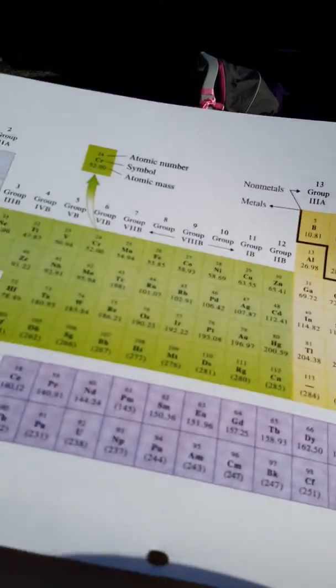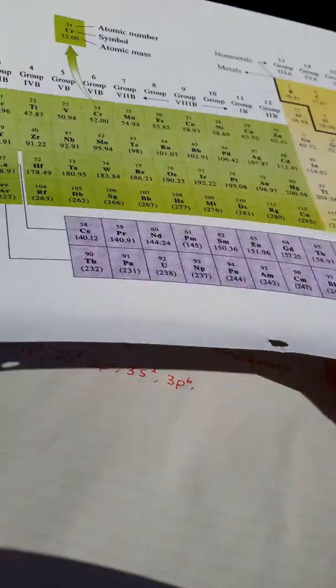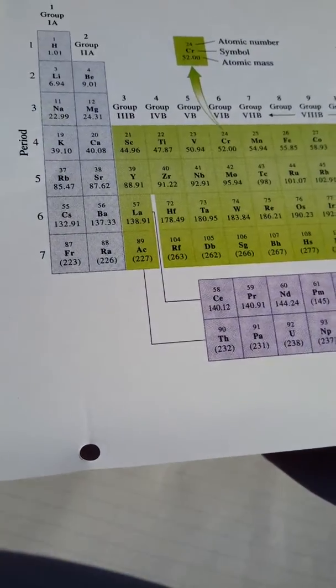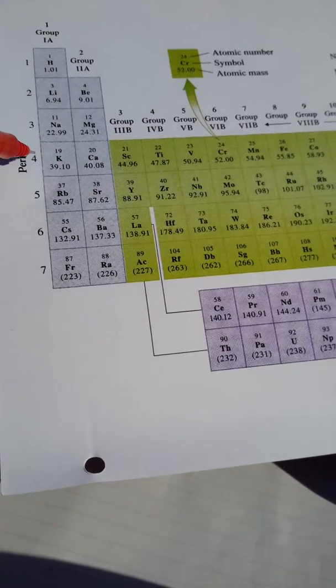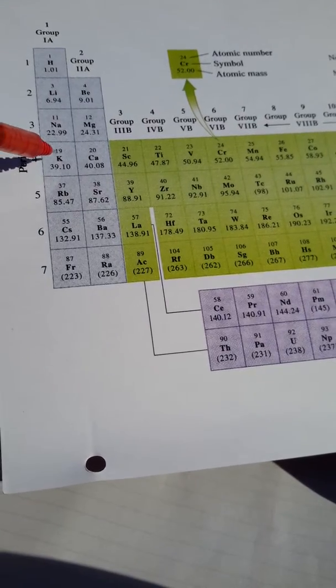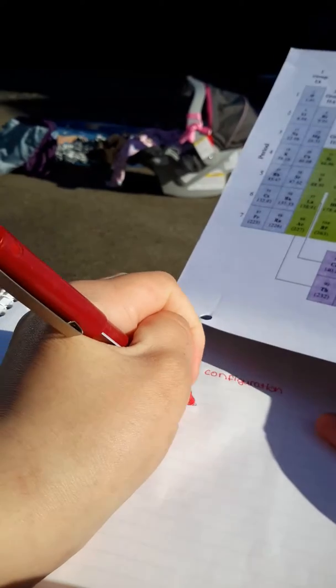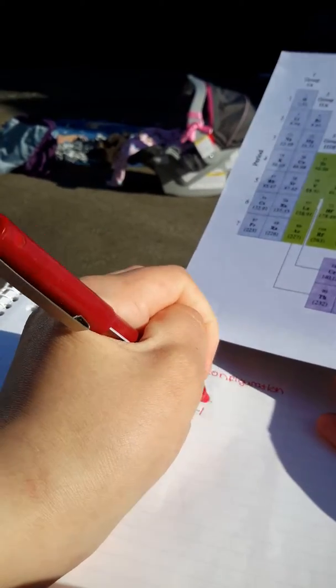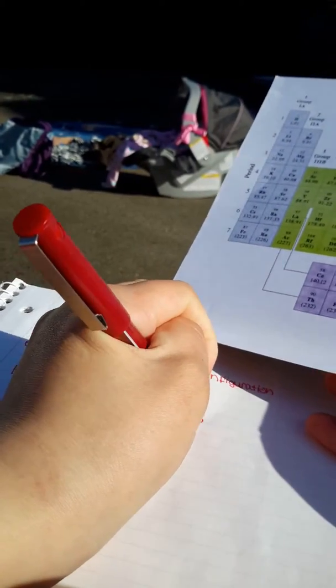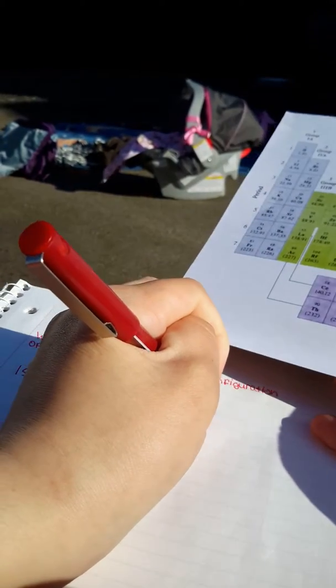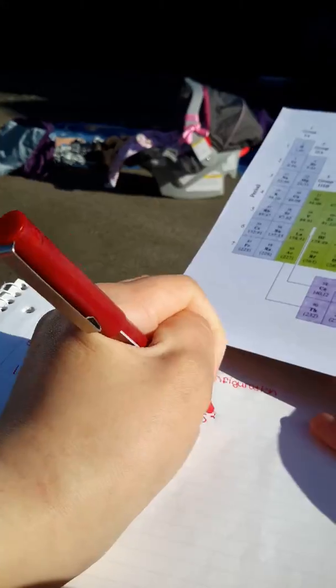Now we're in the fourth row, S block, and there are two atoms, so we write 4s2.